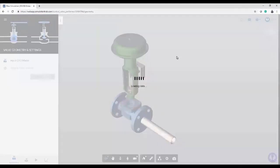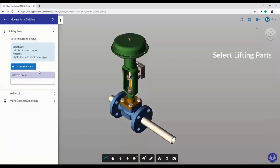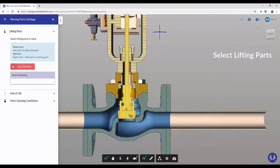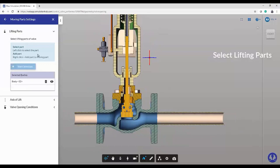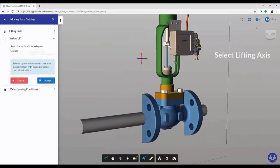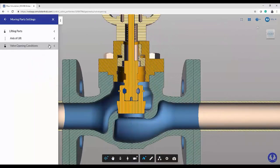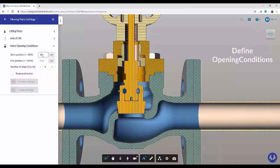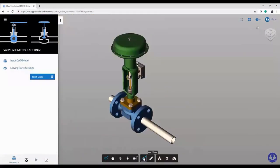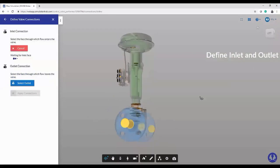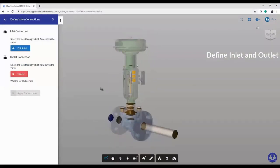We will proceed with selecting the moving components of the valve. First we will select the moving component here. Now the moving component needs an axis to move, right? So we will also be identifying the axis about which it will rotate or lift in either case. Now we will try to set up the start position and end position. It's a linear motion valve, so we see a linear movement in the preview. Now we will go and select which side is the upstream side and which side is our downstream side.